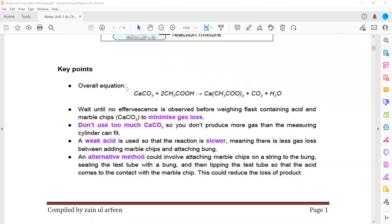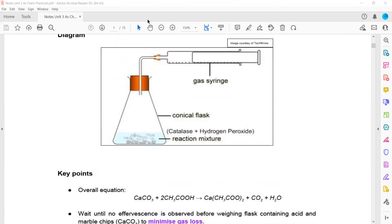A weak acid is used so that the reaction is slower, meaning there's less gas loss between adding the marble chips and attaching the bung.